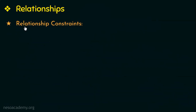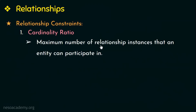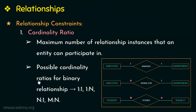Next let us discuss the different relationship constraints. The first constraint is cardinality ratio. Cardinality ratio is the maximum number of relationship instances that an entity can participate in. The possible cardinality ratios for a binary relationship are: one-to-one, one-to-many, many-to-one, and many-to-many. Let us see a few examples — here we have two entities, employee and department.